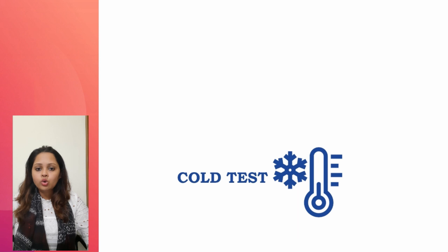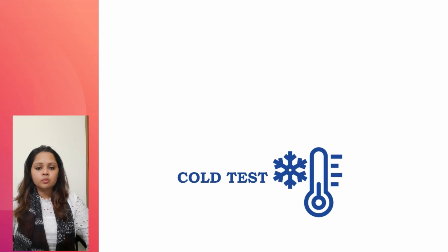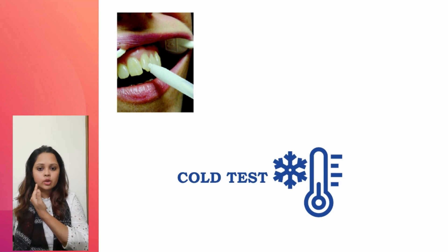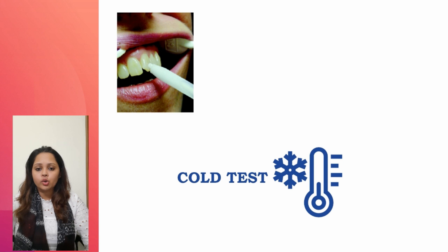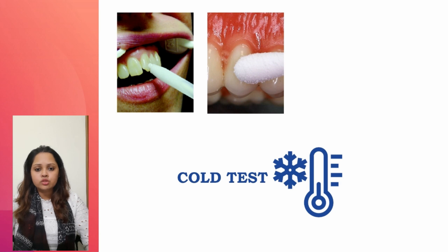When performing a cold test, we must begin with the most posterior tooth and advance towards the anterior teeth. This will prevent any melted ice water from dripping in a posterior direction, which may cause stimulation of other teeth and give a false response. It can be done by wrapping a sliver of ice in wet gauze and placing it against the buccal surface of the contralateral tooth first and then onto the tooth in question. Another way is by spraying ethyl chloride onto a cotton pellet and placing it on the buccal surface of the tooth.